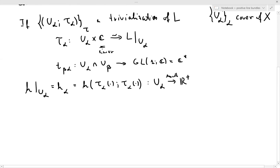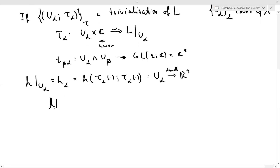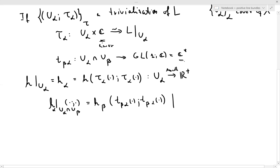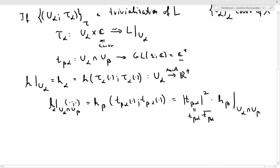The transition between the H_α's: when you look at H_α restricted to the overlap U_α ∩ U_β, this has to equal H_β composed with the transition. The transitions are holomorphic non-vanishing functions, so when you plug them into H_β they come out as |T_βα|² times H_β restricted to U_α ∩ U_β.